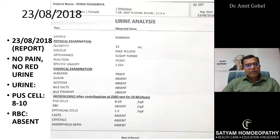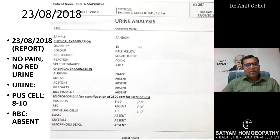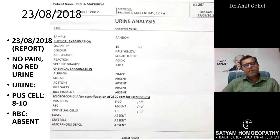On follow-up she reported no pain, no red urine, and everything was normal. On investigation, pus cells reduced from plenty to 8 to 10, and RBCs were absent. This clearly demonstrates the reversal of miasm from syphilitic to psoric.